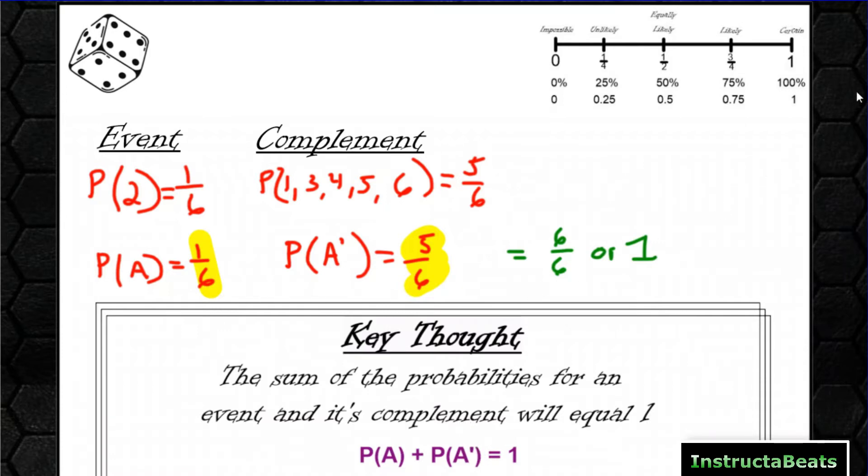And this makes a lot of sense. If you remember this number line we talked about, if you're at a 1, that means you are 100% certain that that will happen. If I roll this six-sided die, I am 100% certain that it's either going to be 2 or not 2. I'm 100% certain of that, which means when we add those two probabilities together, it has to equal 1. And again, we're trying to make it confusing with all this math lingo, but when you break it down and think about it like that, it makes a lot of sense.